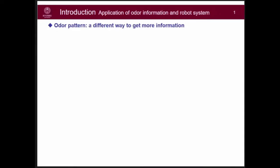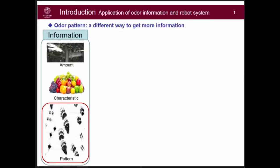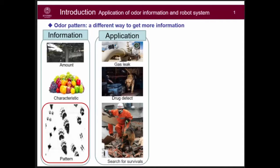Let me begin by talking about odor information. Basically, there are three kinds of odor information: the concentration, the difference, and its shape. We can use the amount to find a gas leak location and the difference for drug detection and rescue after disasters.